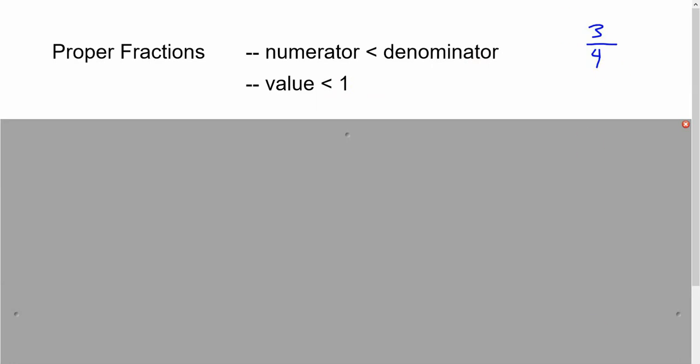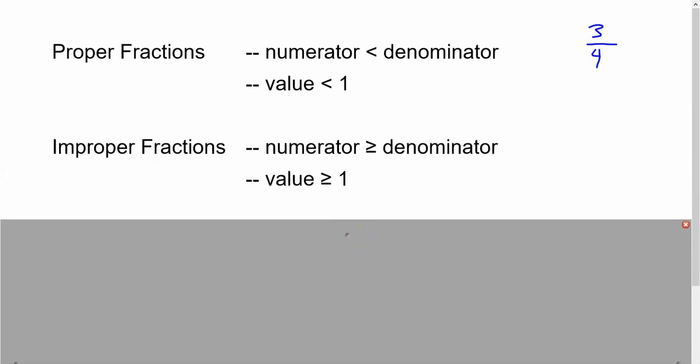This is 3 fourths of one whole thing. It's less than one whole thing. So of course there are also improper fractions. Improper fractions are where the number on the top is bigger than the number on the bottom. And all that means is that we have more than one whole thing.